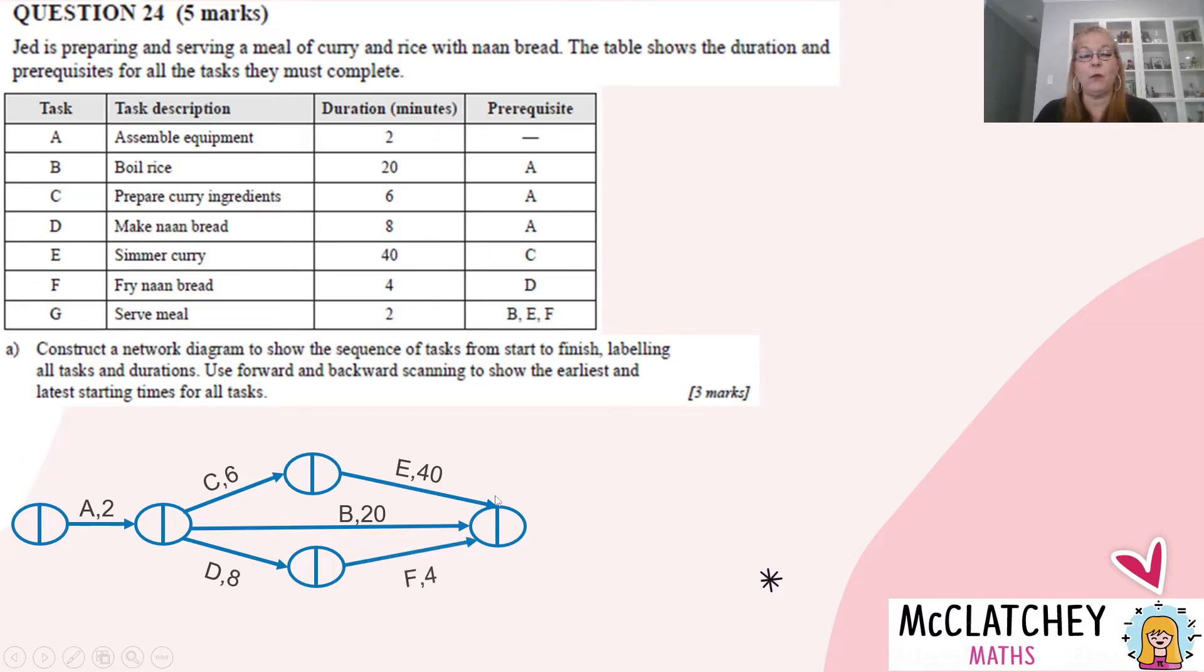Now these all end up in one place because this last step here needs all of these activities to finish before you can serve the meal. You wouldn't serve the meal until you've got everything done. So out of that very last step is our final activity, and there is the finish bubble there. So we've drawn the actual network diagram. We've done our labels from start to finish and our durations.